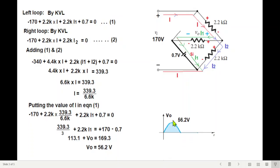So this is the peak output for the positive half cycle. So we can draw it like this. This is the peak, 56.2V. And the shape remains same, sinusoidal. So this is the first half.